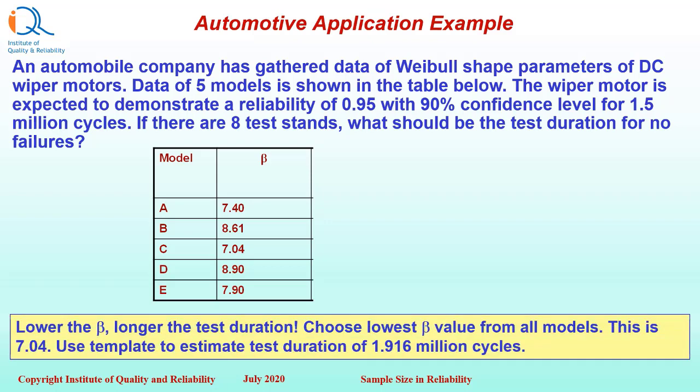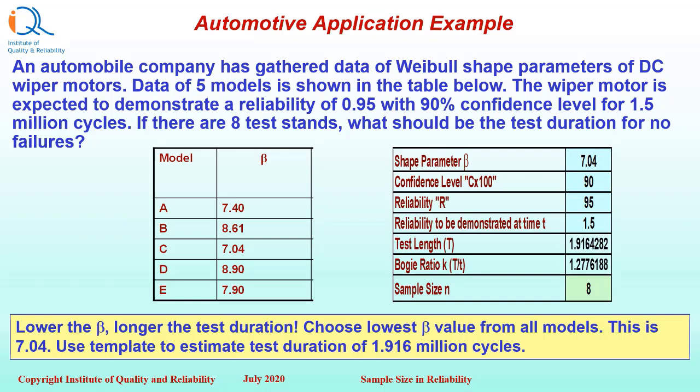Lower the beta, longer will be the test duration. Thus we choose the lowest beta value from all models, which is 7.04. We will use the template to estimate the test duration of 1.916 million cycles as shown here.